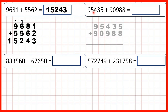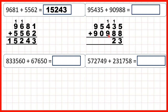Now we have 95,435 plus 90,988. Again we start on the right. 5 plus 8 is 13, so 1,3. 1 plus 3 plus 8 is 12, that's 1,2. 1 plus 4 plus 9 is 14, so 1,4.